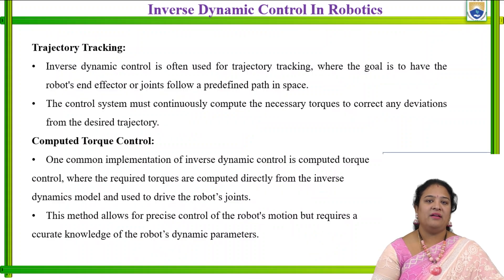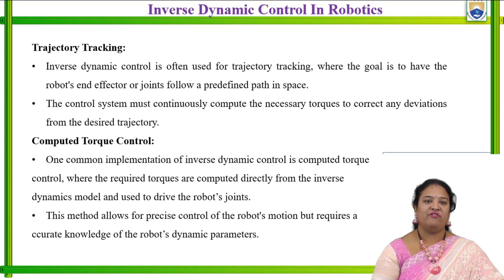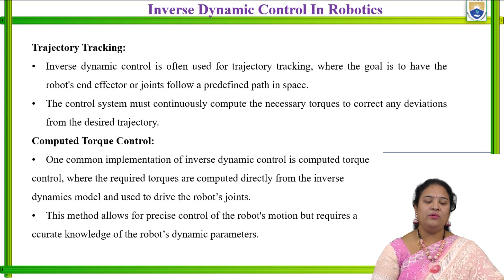Coming to trajectory tracking — how do we track the trajectory motion? This is also one of the important concepts in inverse dynamics. Trajectory tracking plays a very important role in the inverse dynamic system. The goal of trajectory tracking is to have a predefined path — we need to initially have a predefined path in which direction the robot's end effector or joints have to move. That is known as trajectory planning. We should have a goal which is already predefined, inserting that program to the robot, with the help of which the robot starts moving — that is known as trajectory tracking.